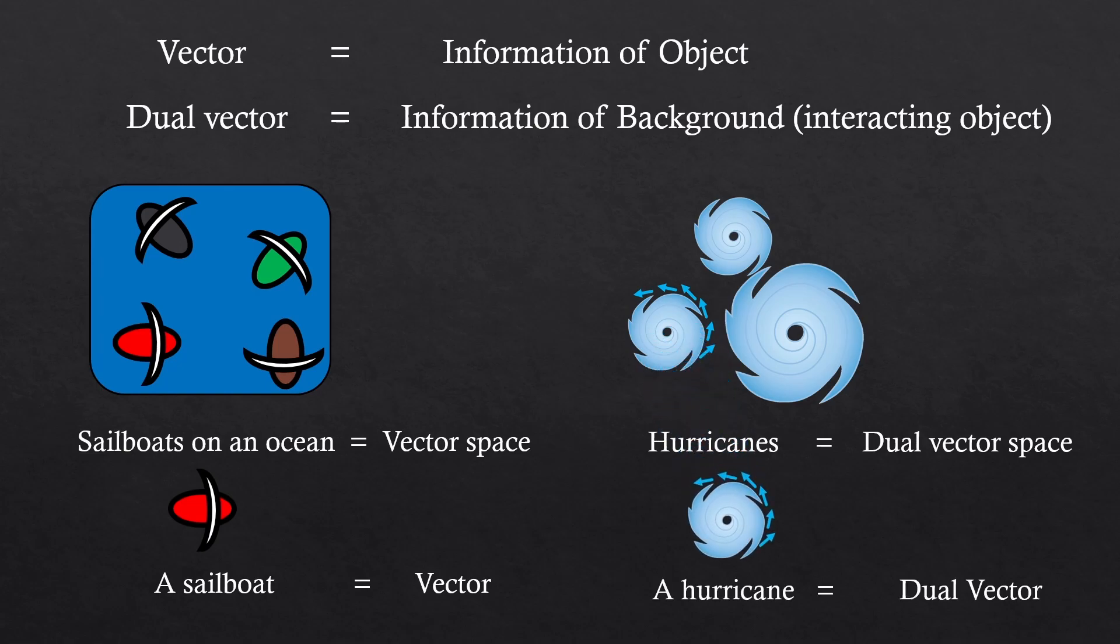What would be the ocean? No, ocean is nothing. It's a calm ocean. We're just going to assume it's not going to affect anything. So hurricanes are just there as the background, and sailboats are the objects that are moving.